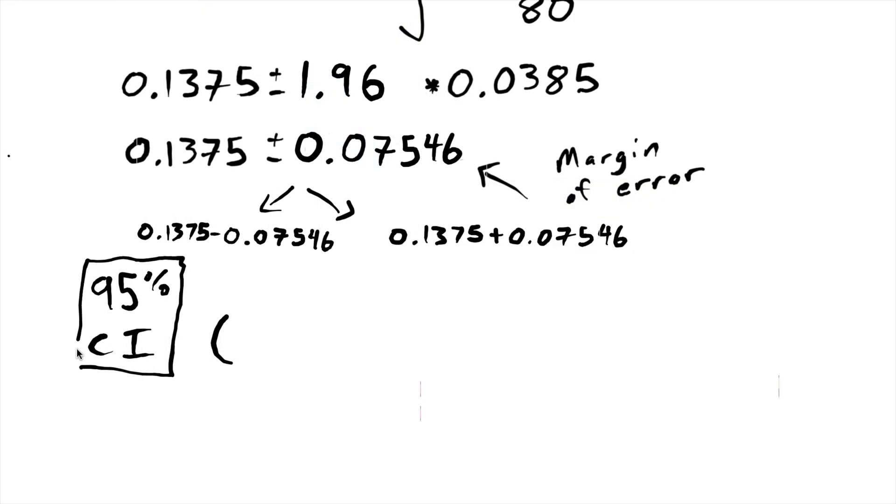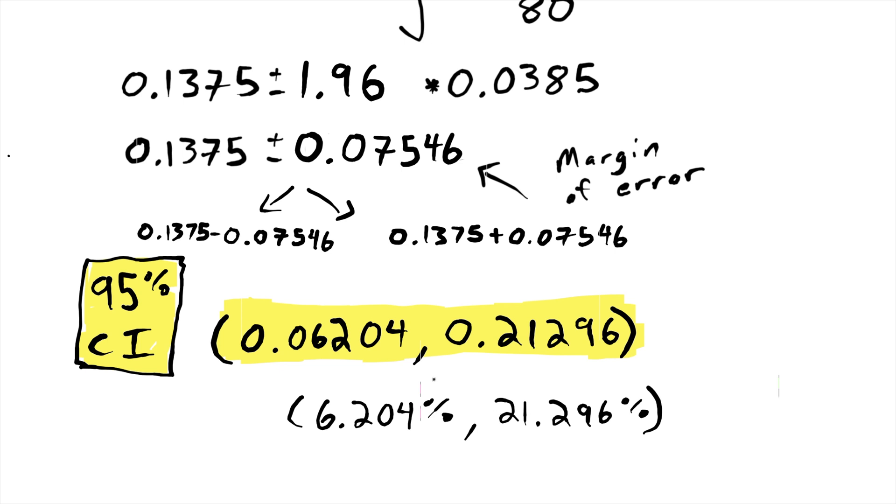And so now I'm ready to do my addition and subtraction. The subtraction makes the lower boundary, and the addition makes the upper boundary. And if I want, I can report that as percentages.